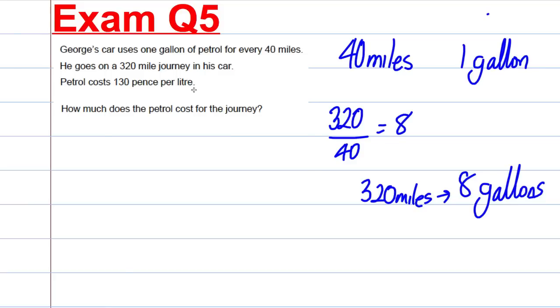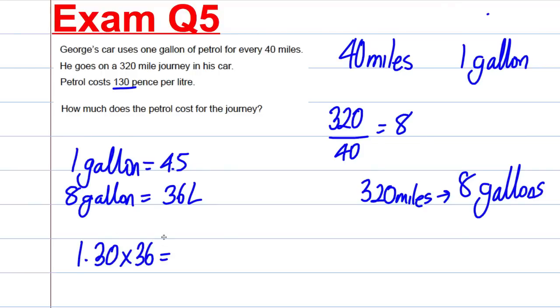Petrol costs 130 pence per litre. How much does the petrol journey cost? So he uses 8 gallons. We're supposed to know that 1 gallon equals 4.5 litres. So 8 gallons is therefore 4.5 times 8, which is equal to 36 litres. So the 8 gallons is 36 litres. It is £1.30 per litre. So £1.30 multiplied by 36 would be £46.80.